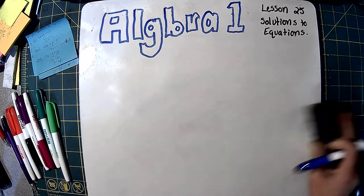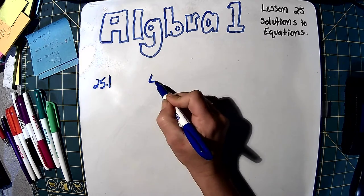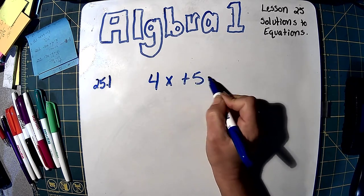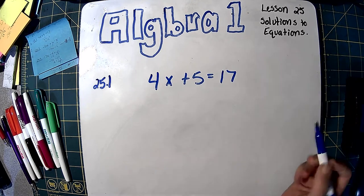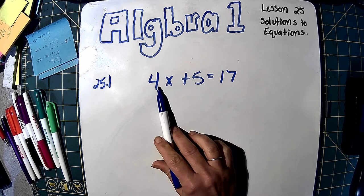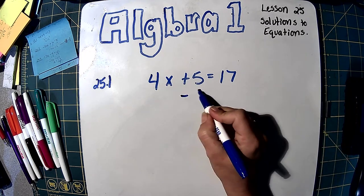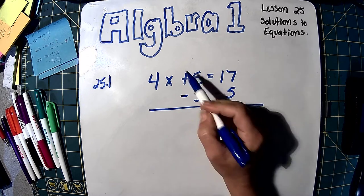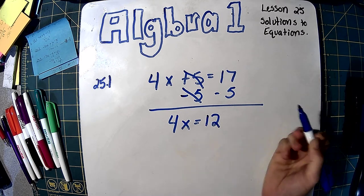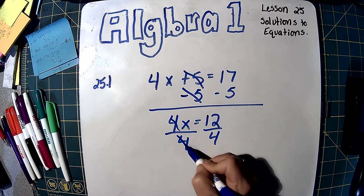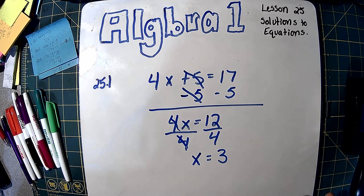We're just doing the opposite of whatever operations we have. This lesson, we're going to put those two together. So 25.1 tells us 4x plus 5 equals 17. In our regular order of operations, we always multiply before we add, but we're undoing this — going backwards. They took our x and multiplied it by 4 and then added 5. So we undo the addition and subtraction first, then the multiplication. First, minus 5 on both sides. Those cancel and we get 4x equals 12. Now we divide by 4 and we get x equals 3.